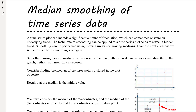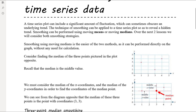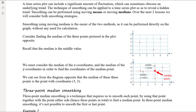We'll look at dealing with seasonality and smoothing our time plot by removing seasonal patterns later in the chapter. What we want to look at here is smoothing our time series plot by either using medians — which we'll look at in this video — or using means, which we'll look at in the next two videos. Smoothing using medians is the much easier option than using means.